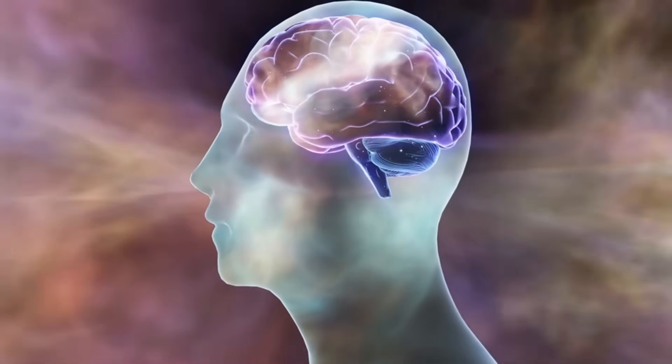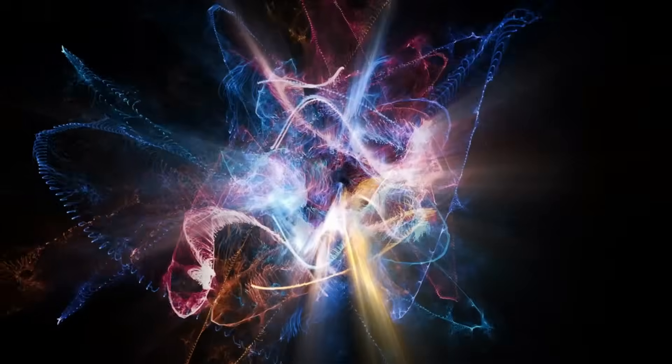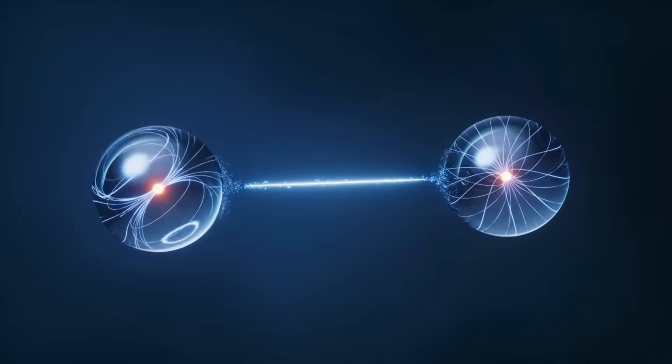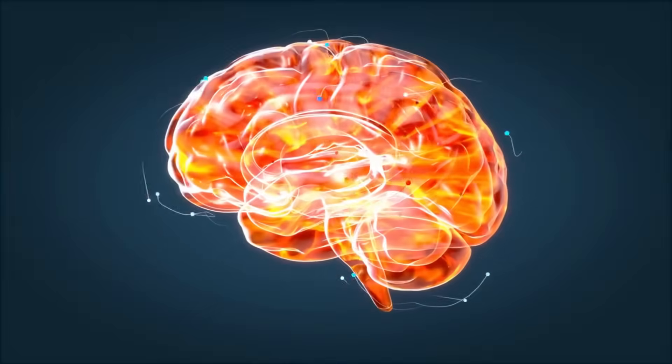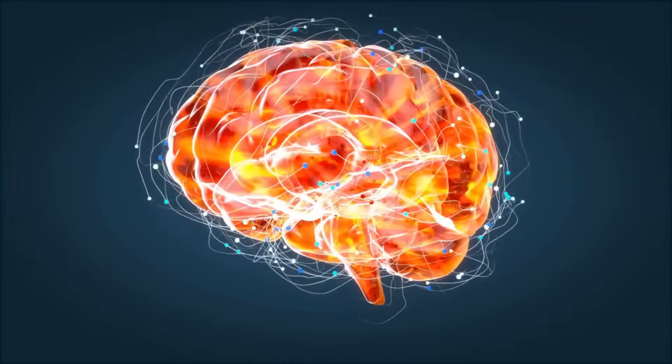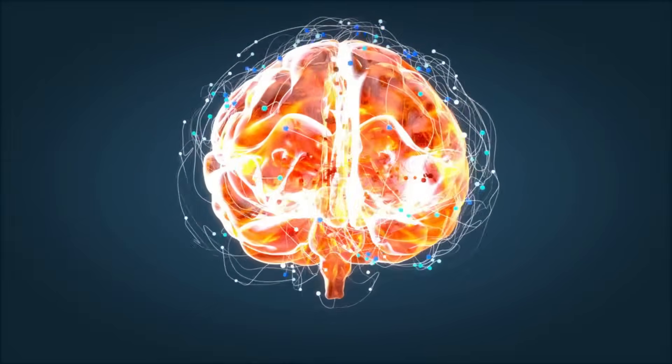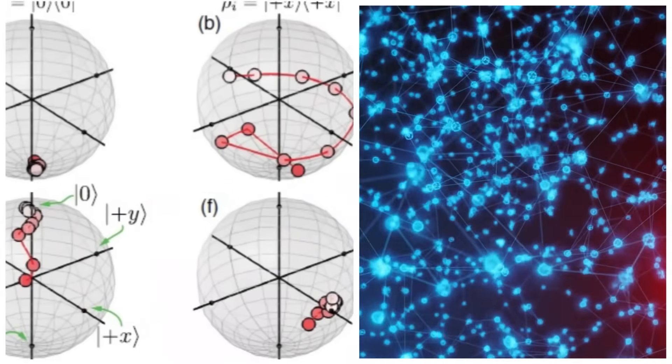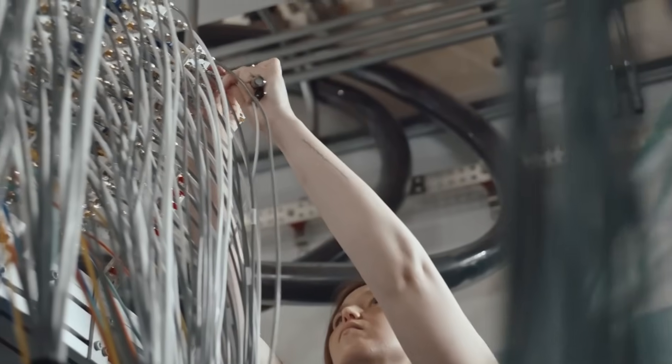The implications? Staggering. Either we are witnessing feedback loops between human consciousness and quantum fields that produce identical mental signatures, or, more astonishingly, the entangled array is generating conscious-like activity on its own. Not simulating thought, but producing it or carrying it. Think about that. A machine built to manipulate probabilities, to calculate amplitudes, may now be hosting something emergent, something aware.